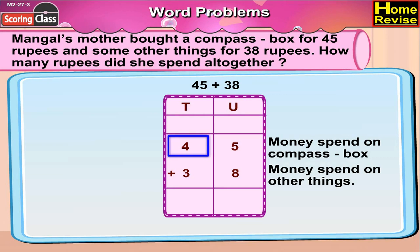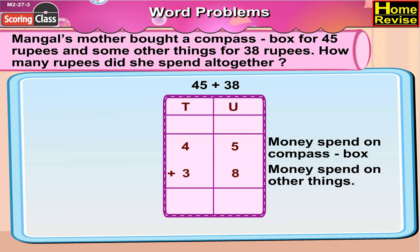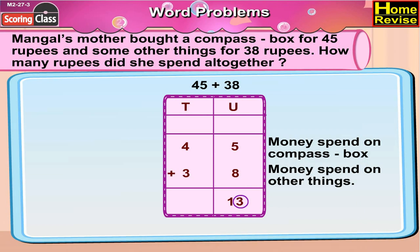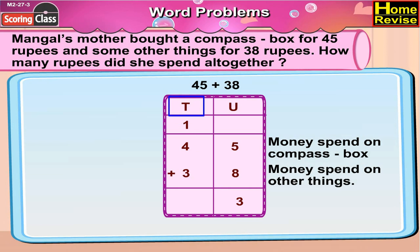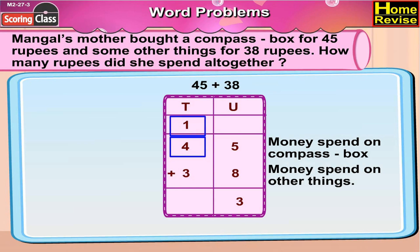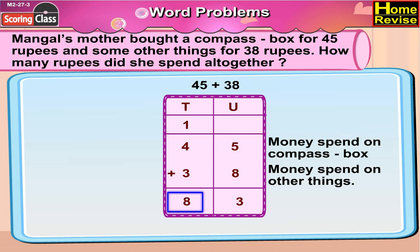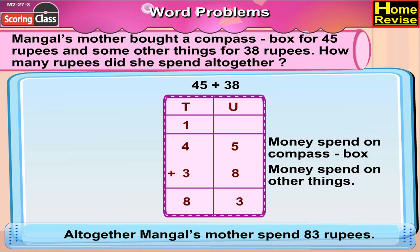So it is 4 tens 5 units plus 3 tens 8 units. 5 plus 8 is 13 — write 3 here and one 10 goes to the tens column. In the tens column it is 1 ten plus 4 tens plus 3 tens, that is 8 tens. So it is 8 tens 3 units, that is 83. Altogether Mangal's mother spent 83 rupees.